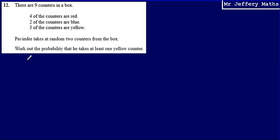This is question 12. We're told there are nine counters in a box: four of the counters are red, two are blue, and three are yellow. Pervinda takes at random two counters from the box. We're asked to work out the probability that he takes at least one yellow counter.